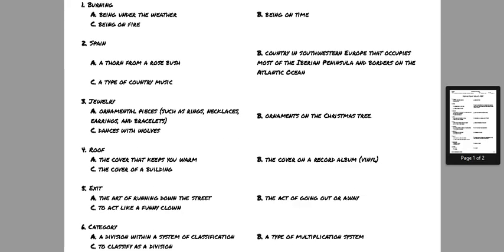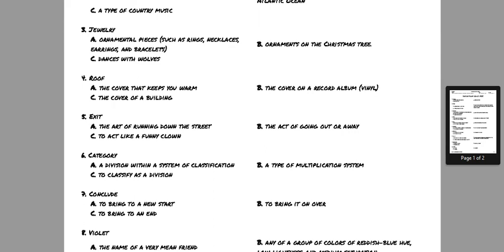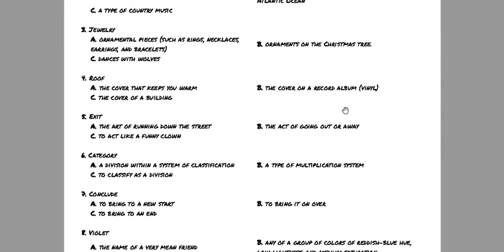Number three, jewelry. Is jewelry A, ornamental pieces such as rings, necklaces, earrings, and bracelets? Is it ornaments on the Christmas tree, or is it dances with wolves?